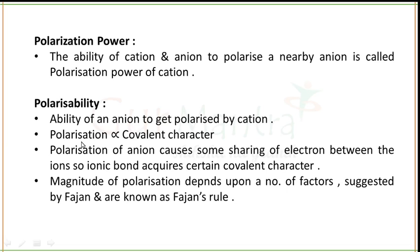Polarization of an anion causes some sharing of electrons between the ions, so an ionic bond acquires some covalent character. That's why polarization means seeing the covalent character in ionic compounds. When you measure the magnitude of covalent character in ionic compounds, this was suggested by a scientist named Fajans, and his rules were named Fajans' rules, which depend on a number of factors.